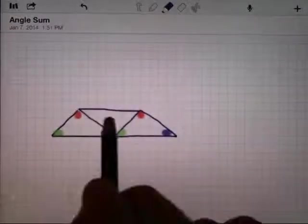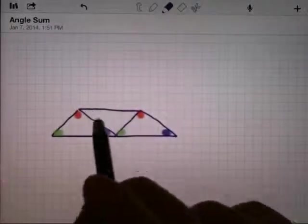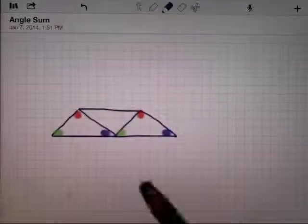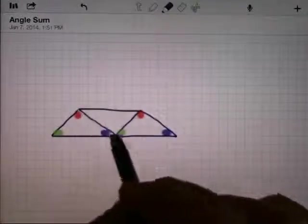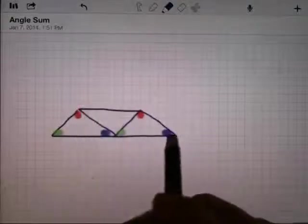Now what I want to see is these angles in between here. I claim that this upside down triangle is the same as the other triangle. So this line is parallel to that one, this line is parallel to that one. I've got a big parallelogram here.